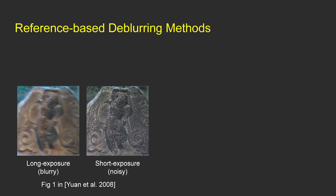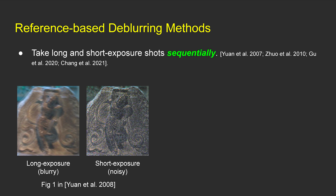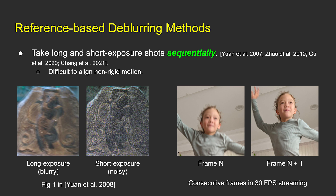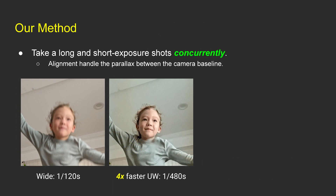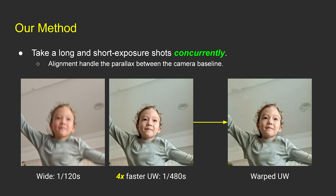Reference-based methods take an additional image for de-blurring, and our method belongs to this category. Existing works typically take long and short exposure shots sequentially using the same camera. We found that such sequentially captured shots could be difficult to align when subject motion is fast, as consecutive frames from a 30fps streaming camera often show non-rigid motion. Instead, we take the main and reference shots concurrently using the wide and ultra-wide cameras, so our alignment only needs to handle the parallax between the camera baseline, which is easier to produce satisfying results.